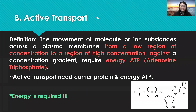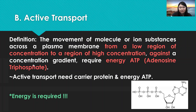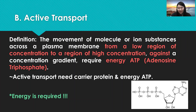Now, active transport. The definition: the movement of molecules or ions across a plasma membrane from a low region of concentration to a high region of concentration — against the concentration gradient — and it requires energy ATP. What is ATP? The full name is adenosine triphosphate. Tri means 3, so it has 3 phosphates: 1-phosphate, 2-phosphate, 3-phosphate.